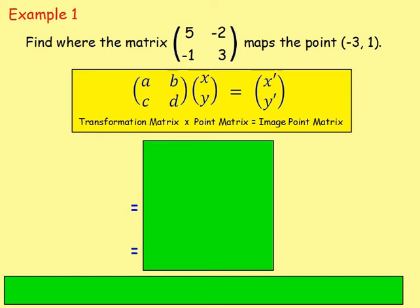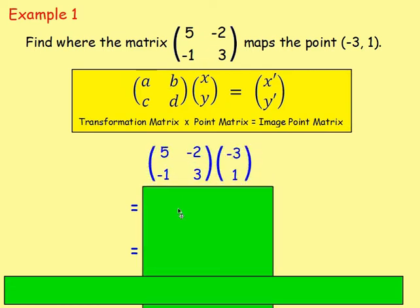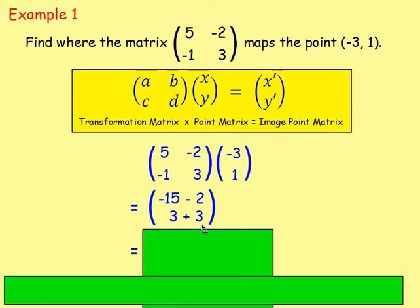Example 1: Find where the 2 by 2 matrix [5, -2, -1, 3] maps the point (-3, 1). To find this out, we know we are going to multiply them together. We take our transformation matrix and multiply it by our point matrix. So this point, negative 3, 1, written as a matrix is [-3, 1]. We have a 2 by 2 matrix multiplied by a 2 by 1 matrix — check that the numbers in the middle are the same.